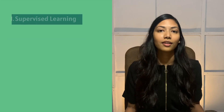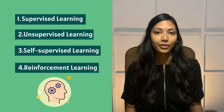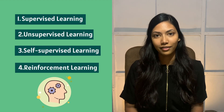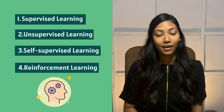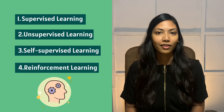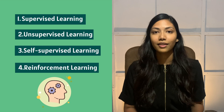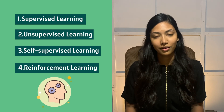There are actually a lot of different types of machine learning algorithms, but there are four overarching categories. The first one being supervised learning, the second being unsupervised learning, the third being self-supervised learning, and the last being reinforcement learning.